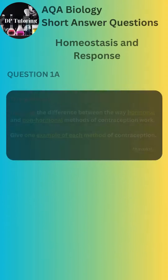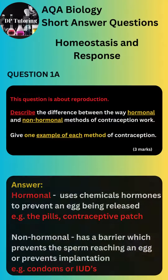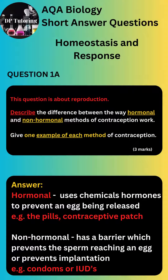Answer for Part A. Hormonal contraception uses chemicals — hormones — to prevent an egg from being released. Examples include the pill and the contraceptive patch.